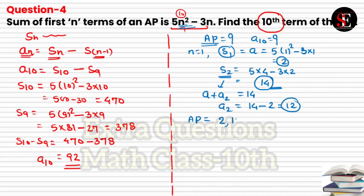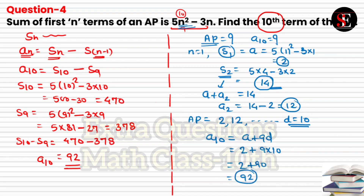So the AP has first term a = 2 and second term 12, giving common difference d = 10. Using the formula a₁₀ = a + 9d = 2 + 9×10 = 2 + 90 = 92. Both methods give the same answer. Use whichever method you prefer; the first method is faster. Let's go to question number 5.